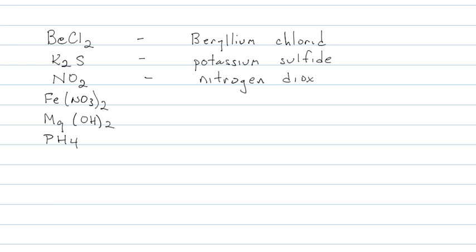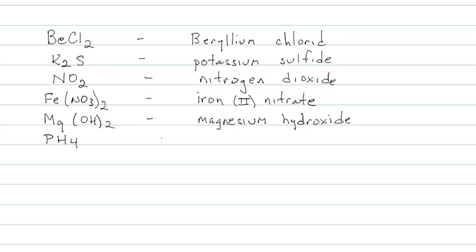Nitrogen dioxide — two nonmetals. A metal and a polyatomic where the metal has more than one positive charge: iron(II) nitrate. A polyatomic where the metal only has one possible charge: magnesium hydroxide. Notice there are some polyatomics that end in '-ide.' Two nonmetals: phosphorus tetrahydride — hydrogen becomes hydride.